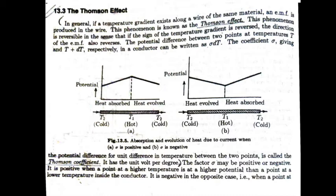The Thomson Coefficient is the potential difference for unit temperature difference between two points. The unit of sigma is volt per degree.